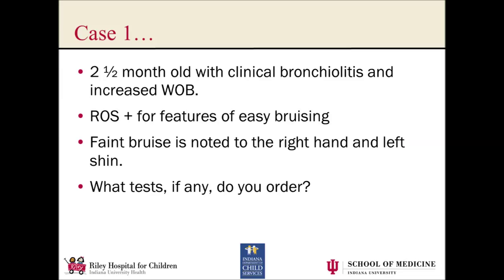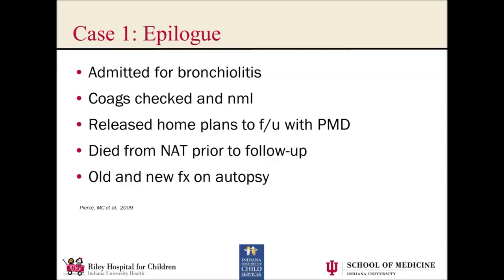This is a case from the literature. The child was admitted for bronchiolitis, they got coags, and they were normal. The child was released to home with plans for follow-up with the primary care physician for further evaluation of this easy bruising diagnosis, but unfortunately never made it there because she died from inflicted injuries first. At autopsy, there were old and new fractures consistent with previous abuse, suggesting that maybe we could have picked this up sooner.